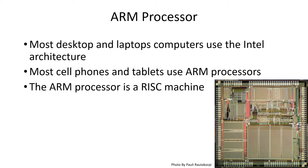Most of your laptops, desktops, and servers use the Intel architecture — your i5s, your i7s. But most cell phones and tablets use ARM processors. The ARM is a RISC machine.